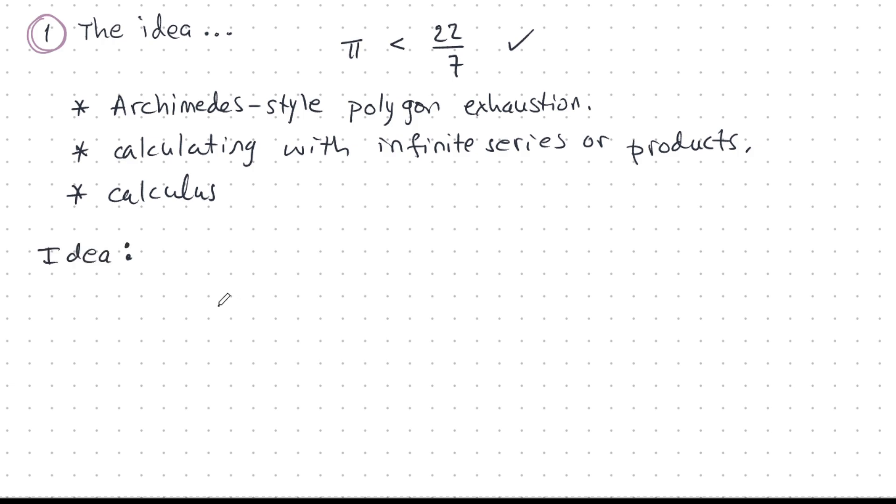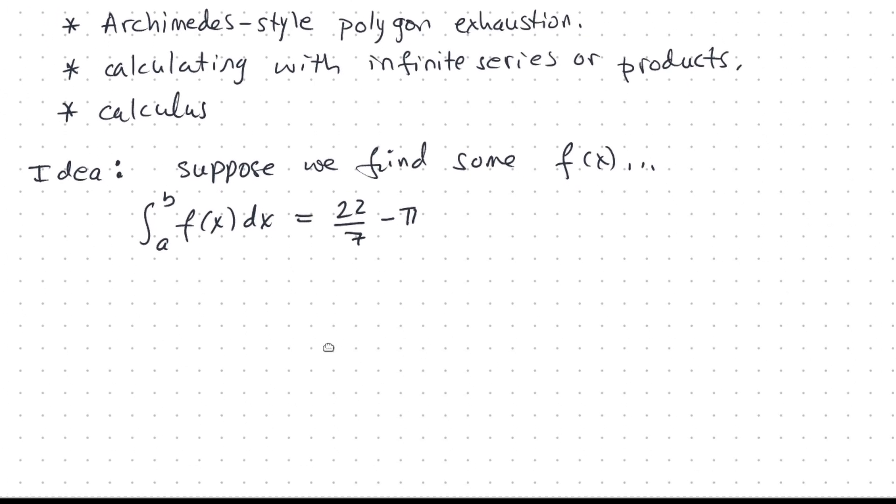So let me sketch out the idea. Suppose we find some function f of x that has some really good properties, that the integral over some definite interval is 22 over 7 minus pi. It just so happens to work out that way. And furthermore, let's say that f is strictly positive on all of AB.